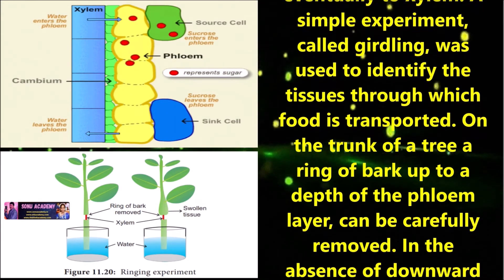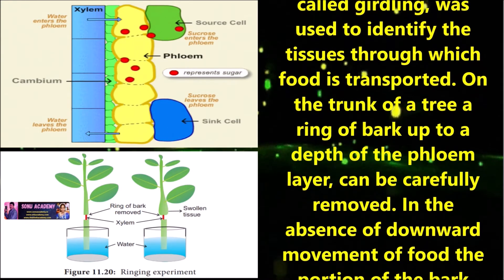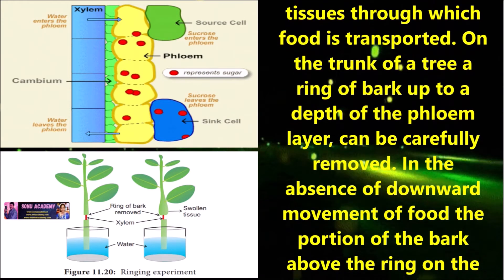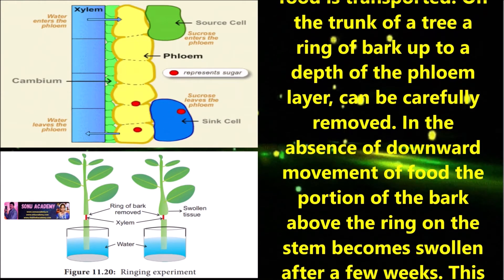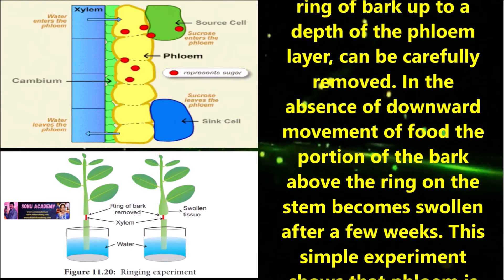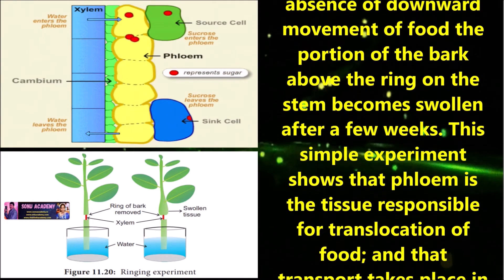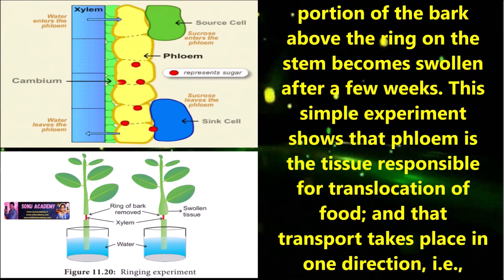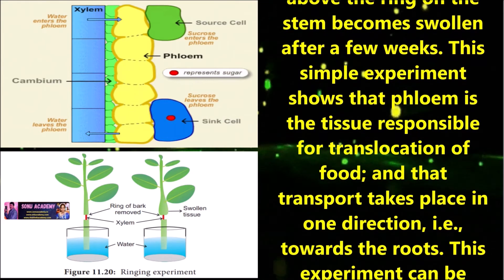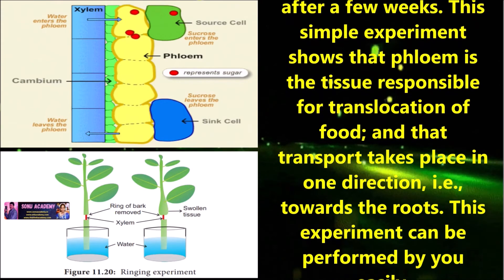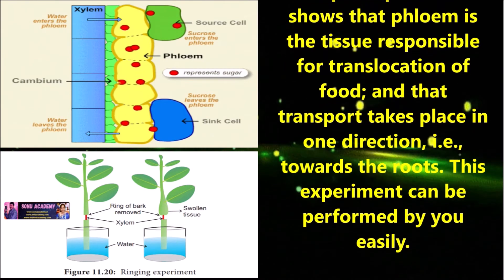A simple experiment called ringing was used to identify the tissue through which food is transported. On the trunk of a tree, a ring of bark up to the depth of the phloem layer can be carefully removed. In the absence of downward movement of food, the portion of the bark above the ring on the stem becomes swollen after a few weeks.